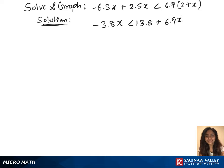Now subtract 6.9x on both sides, so that gives us minus 3.8x minus 6.9x on the left, less than 13.8. Combine the like terms again on the left, so that's minus 10.7x less than 13.8.